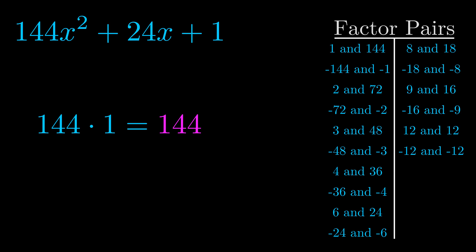The b value is the coefficient on the x term. That's the middle term, the one that we haven't done anything with yet. And really this is the only factor pair that we need.